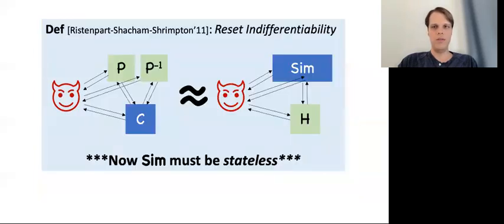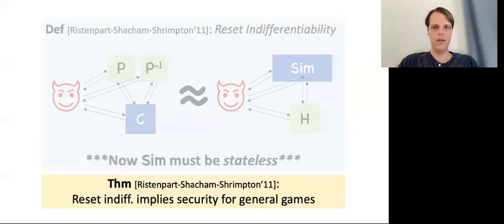To remedy this issue, Ristenpart et al. proposed a notion called reset indifferentiability, which is exactly identical to plain indifferentiability except that the simulator is now required to be stateless. They then prove what I'll call the RSS composition theorem, showing that reset indifferentiability composes and implies security for general, potentially multi-stage games. They even show that this characterization is tight: if you don't have reset indifferentiability, then there must exist some game where security fails.